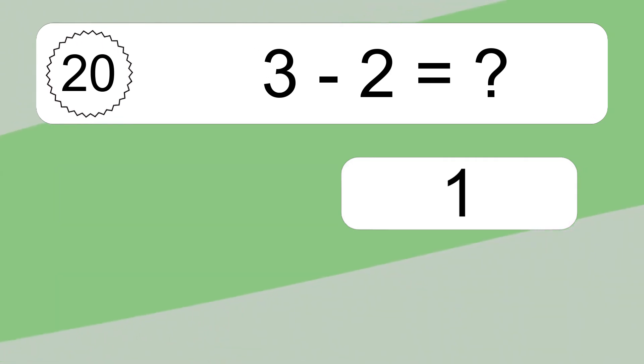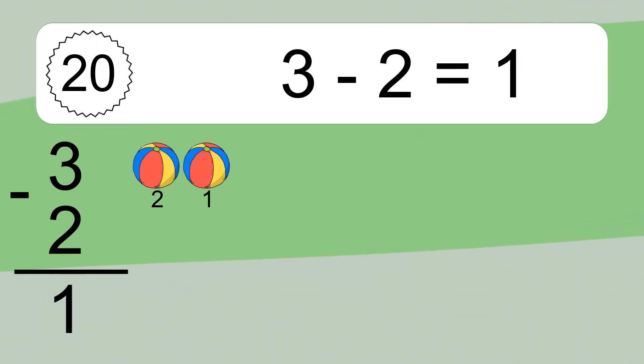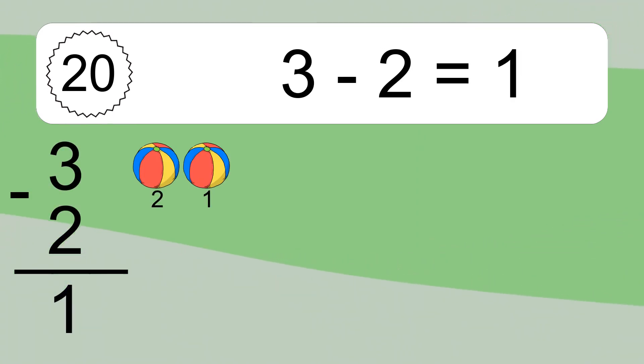3 minus 2 equals what? 3 minus 2 equals 1. Let's count it: 2, 1.